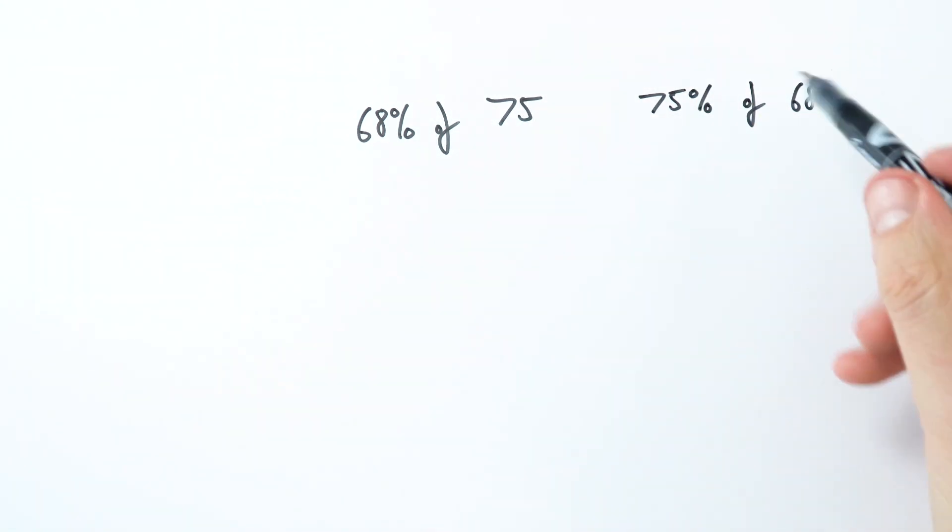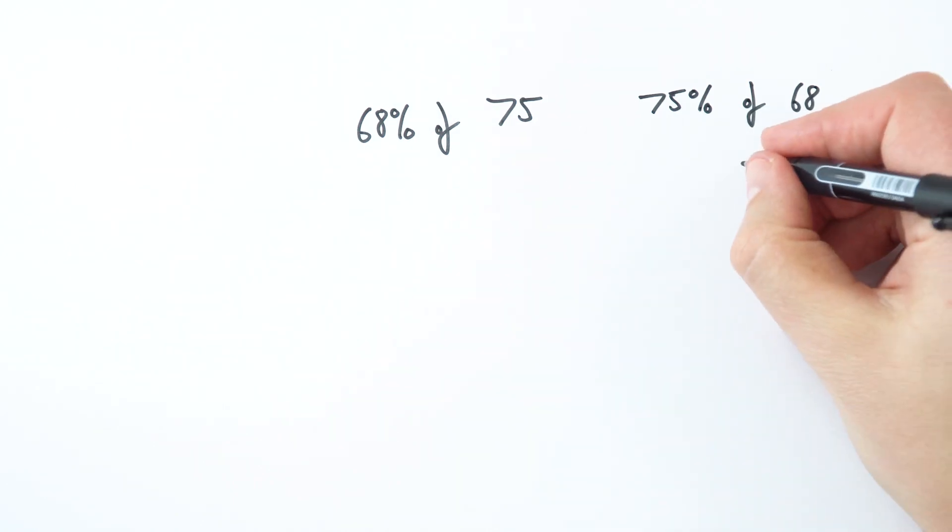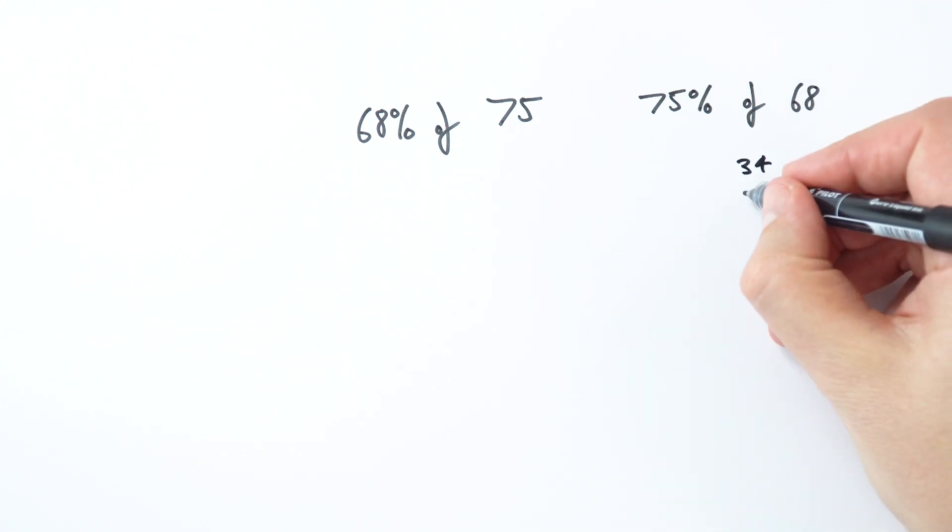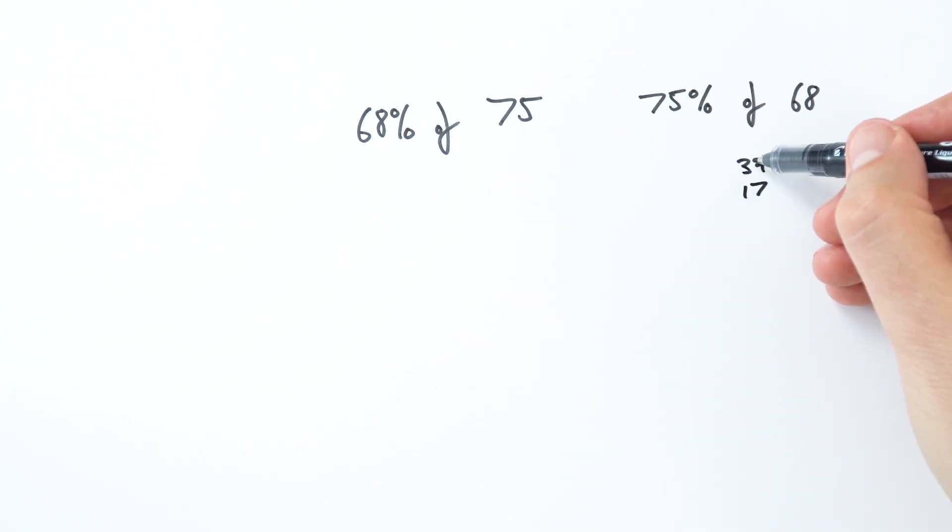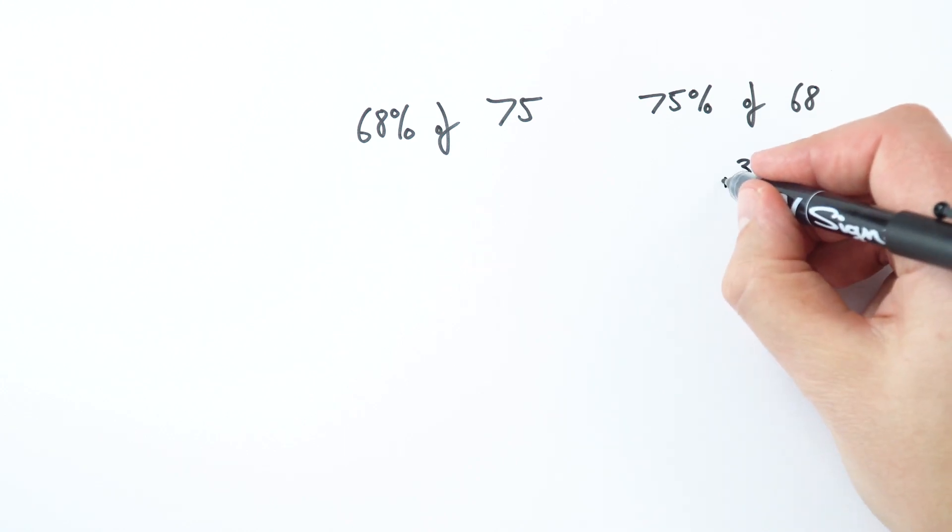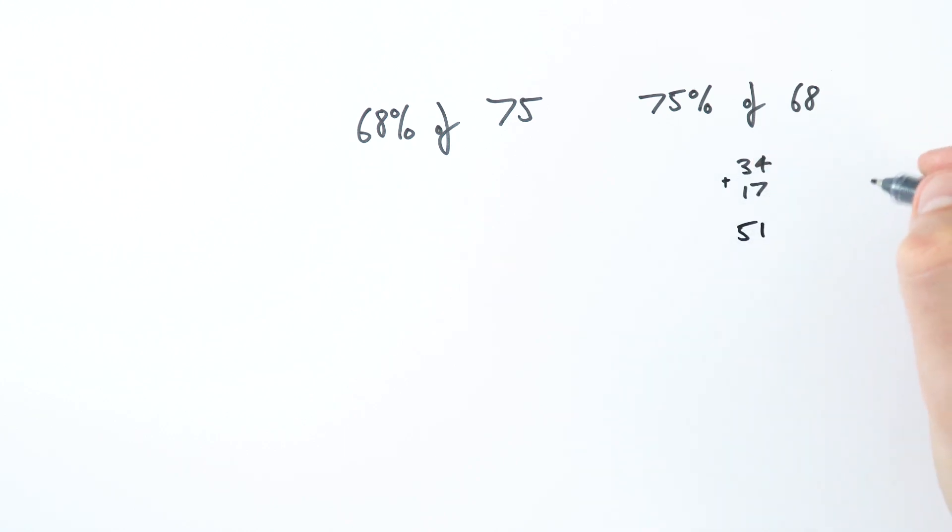Okay, so if we think about what 75% is, you know, what's three quarters of 68, well half of this is equal to 34, half of that again is 17, so that's 50%, that's 25%, which means the total is equal to these two numbers added together, which is just equal to 51.